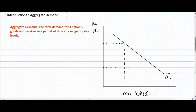It's similar to a demand curve in that at higher price levels a lower quantity of national output or real GDP is demanded. As you can see here, at a higher price level of PL1 only Y1 output will be demanded, but as the price level falls to PL2 the quantity demanded will increase to Y2.